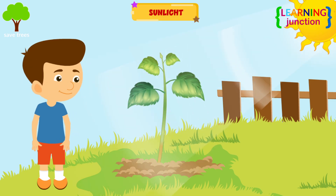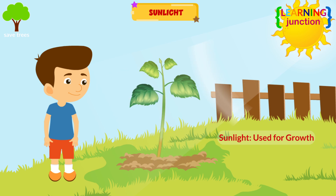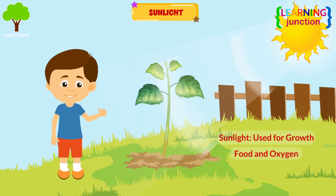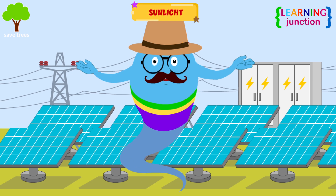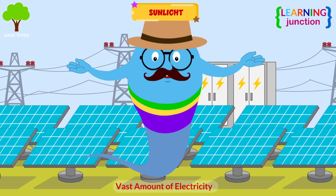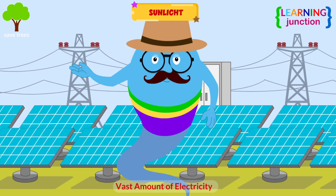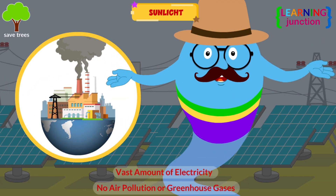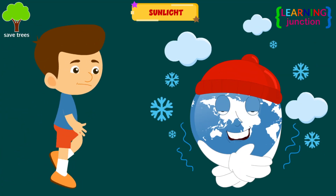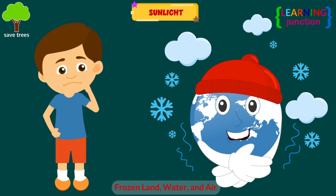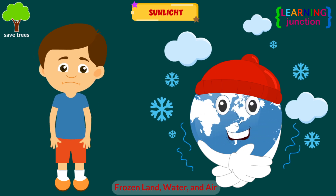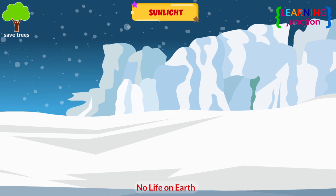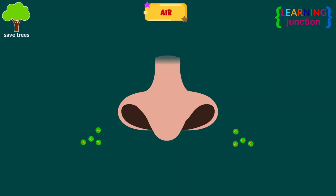Sunlight. Plants require sunlight to grow. We all need plants for food and the oxygen they provide. With the sunlight's energy, a vast amount of electricity is produced, which does not cause air pollution or greenhouse gases when operating. Without the sunlight, the Earth's land, water, and air would all be frozen. Life on Earth would cease to exist.